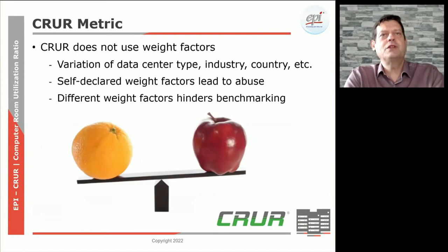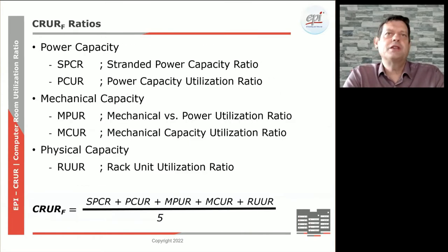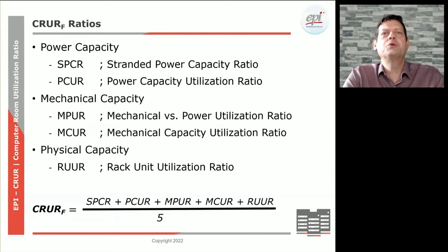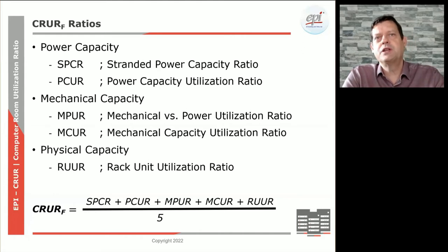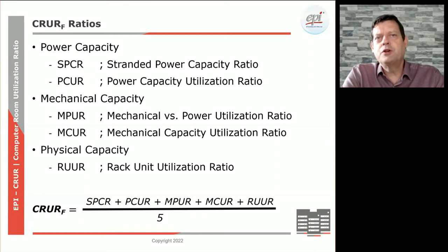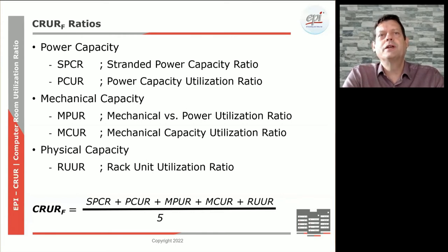For those of you who attended last time, I explained that in the CRUR we are not putting in any weight factors. If we look at this particular formula — five components — we are not putting a weight factor on those components, because obviously that would lead to very skewed results for different data centers for different purposes. A commercial data center might have different weight factors than an enterprise data center, and we want to make sure that whatever number comes up as a baseline, organizations can truly compare.